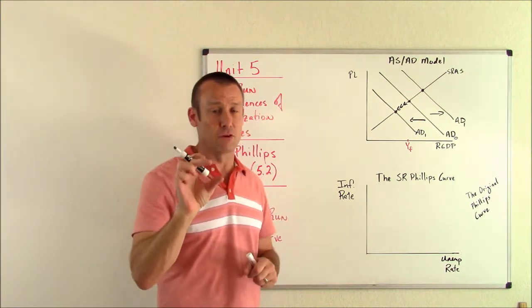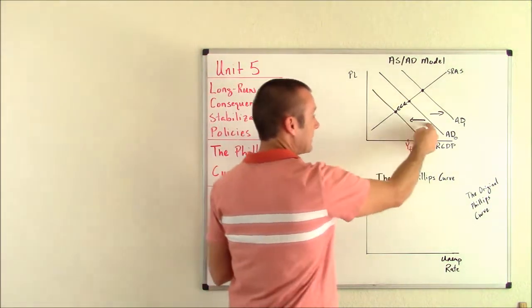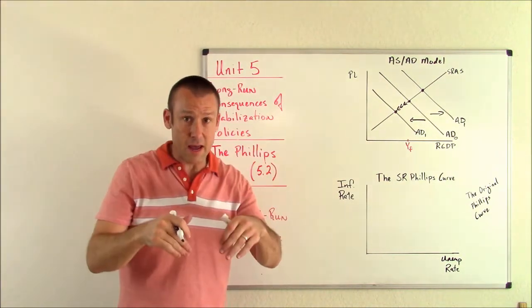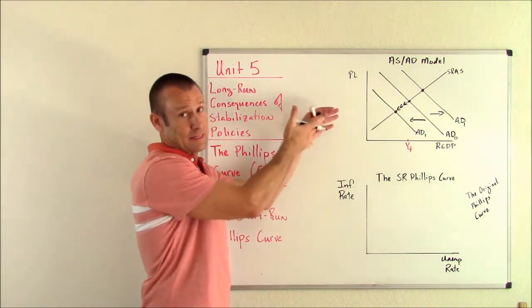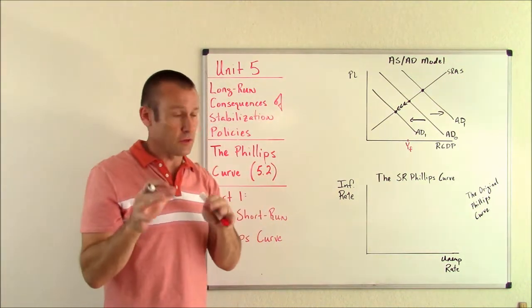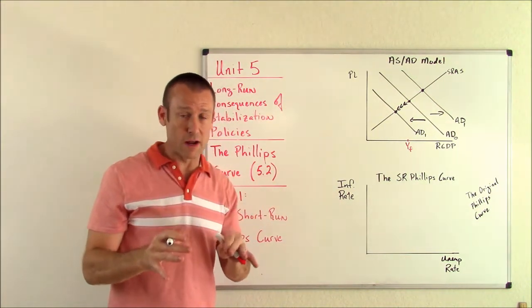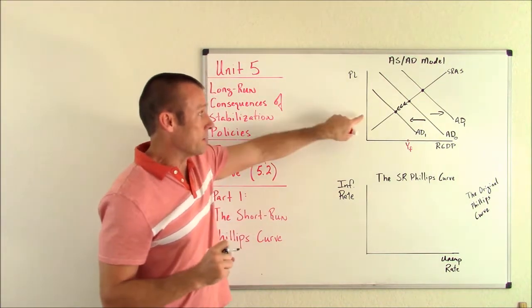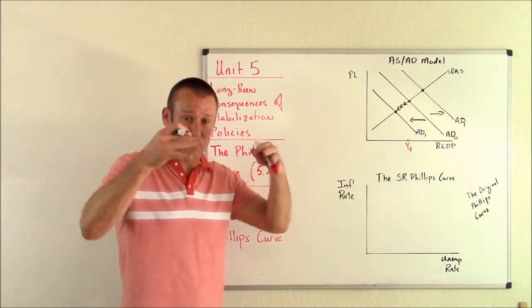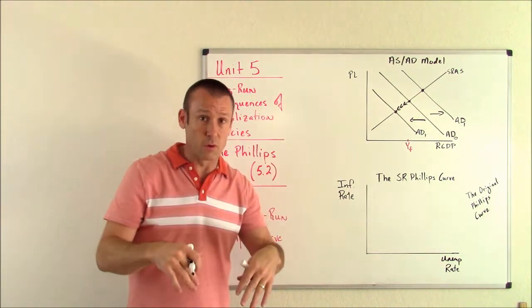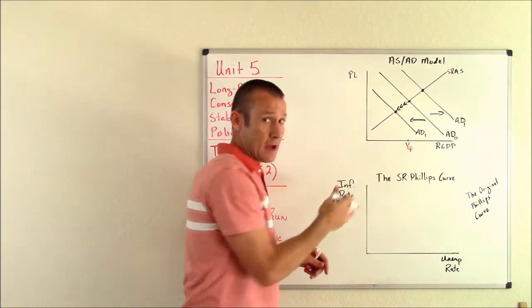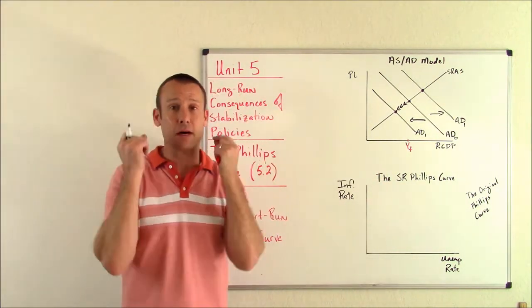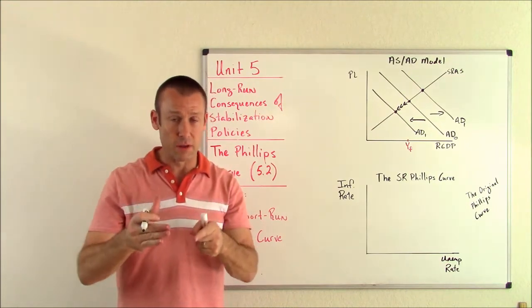When AD shifts to the left, price level's going down, we're going to see the inflation rate come down. In fact, this model says we're going to get deflation. We'll see how the Phillips curve gives us more nuance - we can see things like disinflation. But AD shifting left, inflation rate's going down, real GDP is going down, so the unemployment rate is going up. Again, inverse relationship.